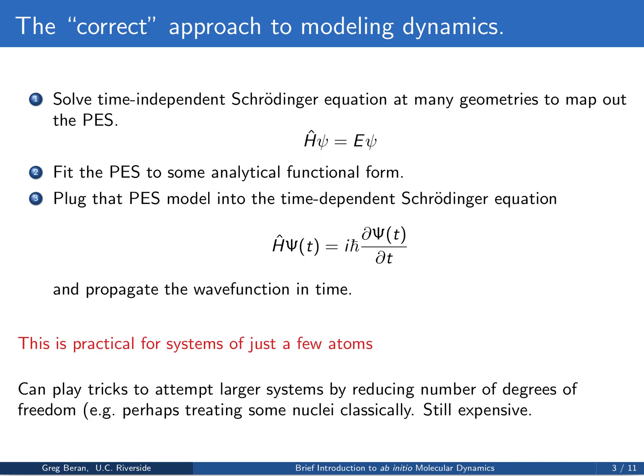Now, the correct approach to modeling dynamics would involve solving the time-dependent Schrödinger equation. What we would do, for example, is solve the time-independent Schrödinger equation at many geometries and map out the potential energy surface — energy versus the nuclear coordinates. We'd then fit that potential energy surface to some analytical functional form, and once we have that functional form, we can plug it in as the potential in our Hamiltonian in the time-dependent Schrödinger equation. We can then solve it to understand how the wave function propagates in time.